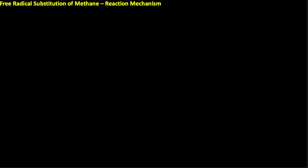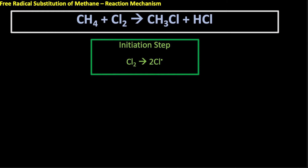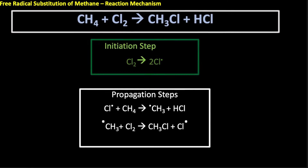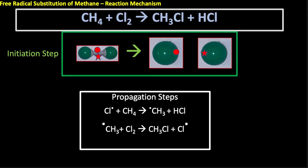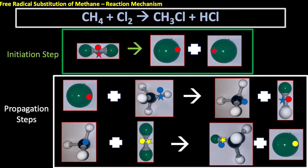Let's put those together: there's my overall reaction, initiation step, and my two propagation steps. Looking at the molecular models, we have chlorine breaking up to produce chlorine free radicals in the initiation step, and then pictures of the two propagation steps. Remember: one initiation step requiring UV light, and then always two propagation steps.